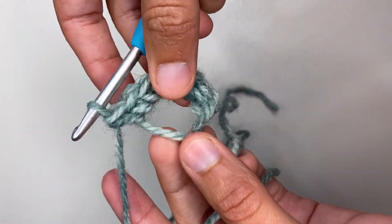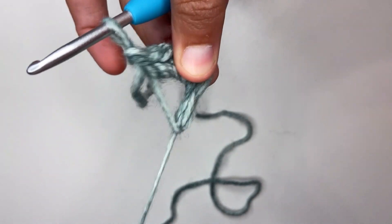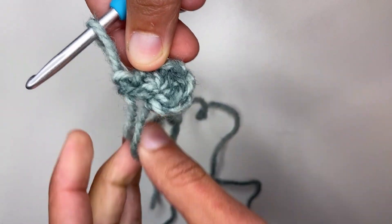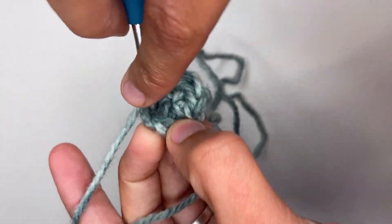You're going to find the end of your yarn and pull that yarn tight to close the loop. And now you have the magic circle and you should be ready to start crocheting in the round.